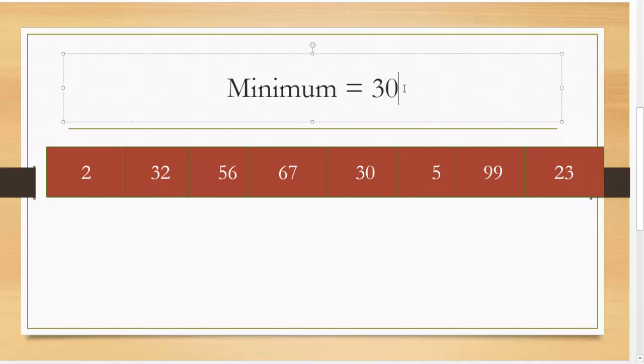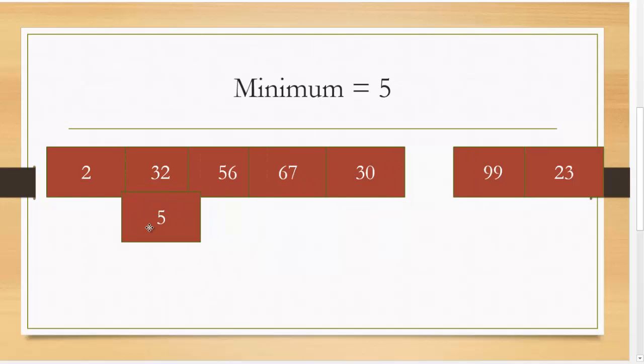But I have to go until I get to the end of the array. 5. Is that smaller? Yes it is. So 5 is smaller. Is 99 smaller than 5? Remember I'm comparing it with the minimum value. No it's not. And is 23 smaller than 5? No it's not. So I'm going to swap 5 with 32.